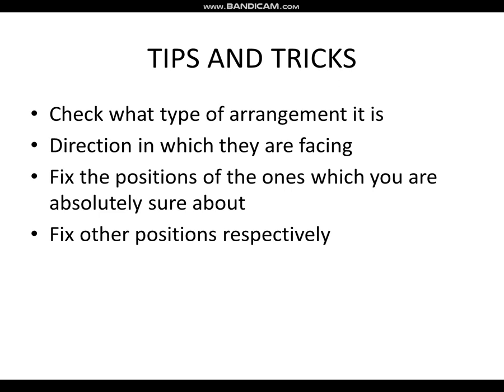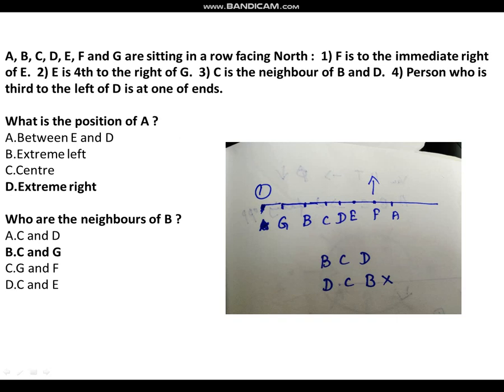Now let's discuss the first question. A, B, C, D, E, F and G are sitting in a row facing north. Draw a line facing north. F is to the immediate right of E — E has a fixed position; since they are facing north, E is fourth to the left of G — mark G after three positions to the left of E. C is the neighbor of both B and D, so either B-C-D or D-C-B are the two possibilities.